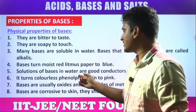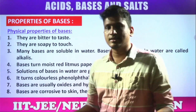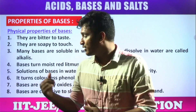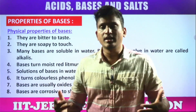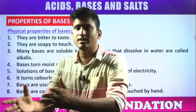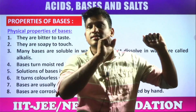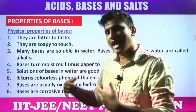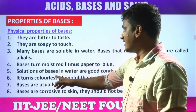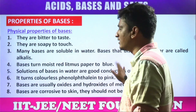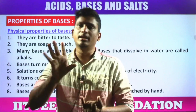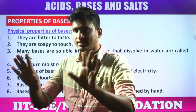Solutions of bases in water are good conductors of electricity because when bases dissolve in water they release hydroxyl ions and respective metal ions; these ions act as carriers of electricity. Bases also turn colorless phenolphthalein to pink color. Color changes: in litmus — red to blue; in phenolphthalein — pink color; in methyl orange — yellow color.